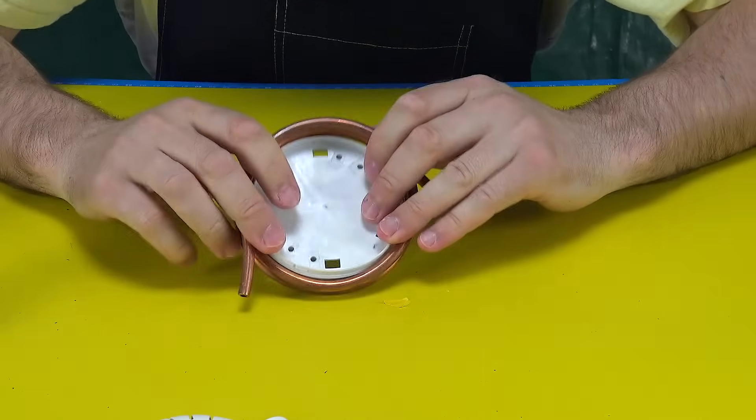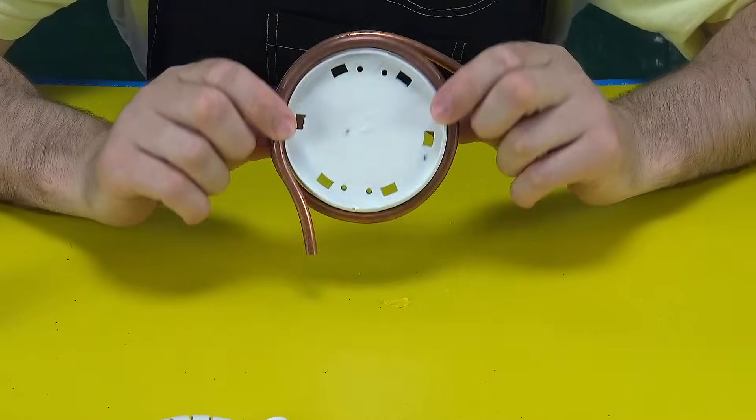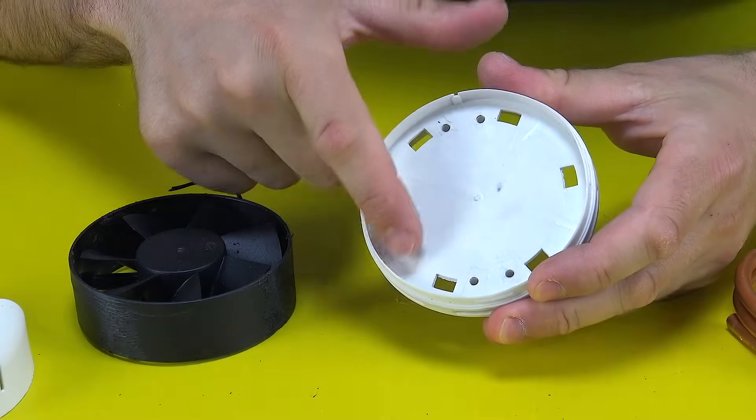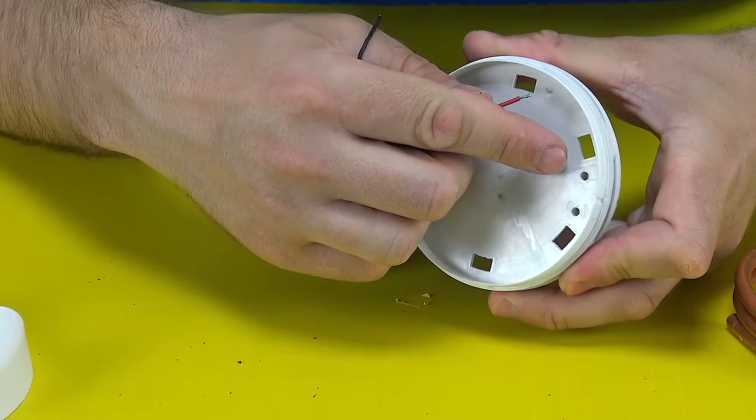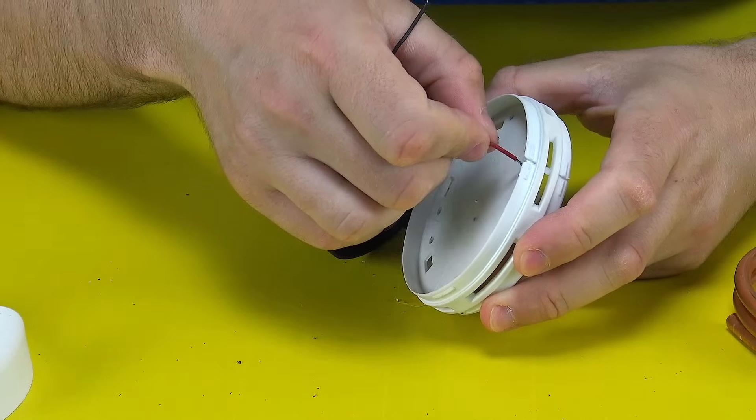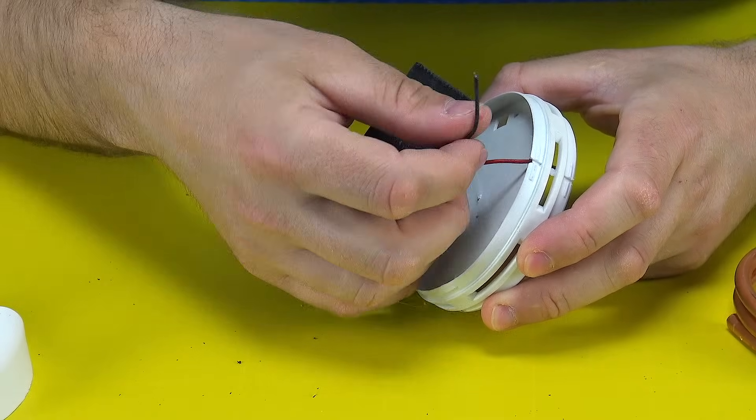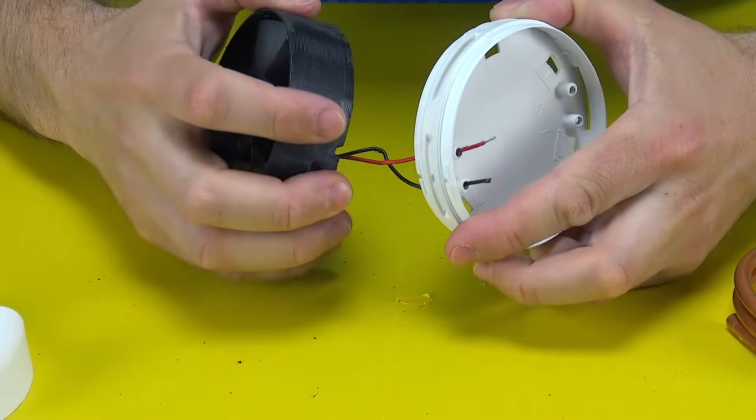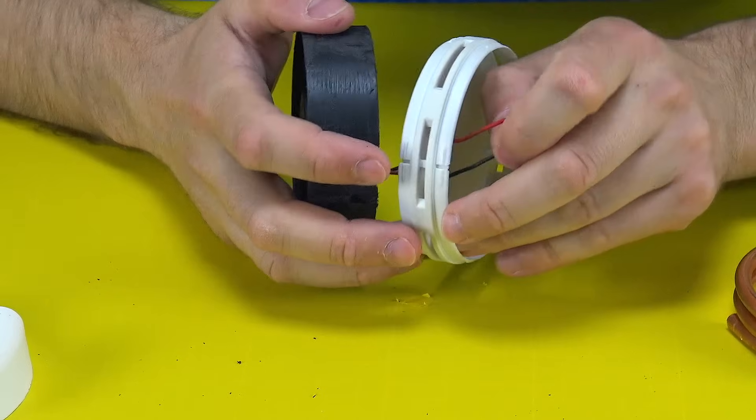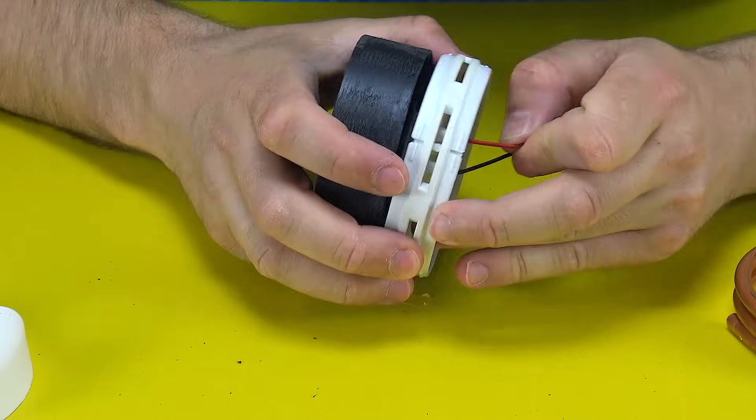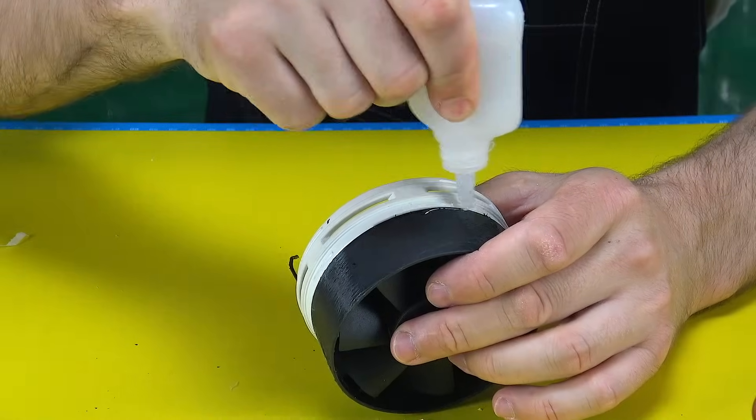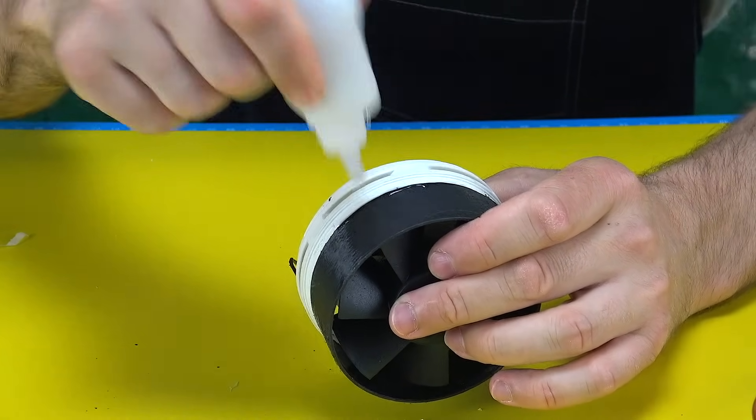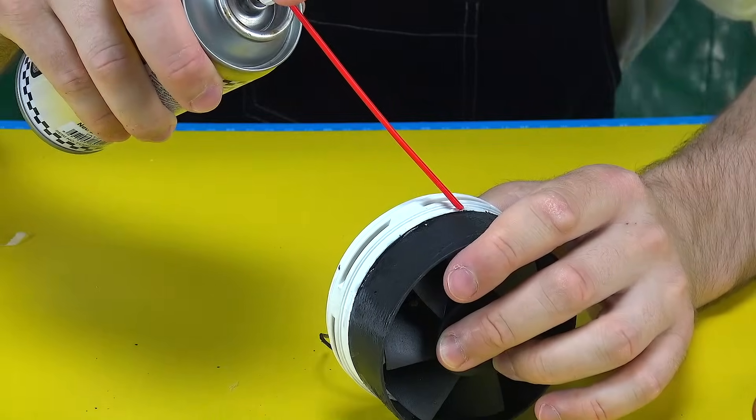The condenser is a crucial part of refrigeration and air conditioning systems. Its main job is to release heat from the hot, compressed refrigerant gas, turning it back into a liquid. Imagine this: after the compressor squeezes the gas tightly, it becomes very hot. The condenser cools this gas down by releasing heat into the surrounding air, so the refrigerant turns back into liquid and gets ready for the next cooling cycle. Without the condenser, the system simply won't work efficiently. Normally, the heat would stay trapped inside, and you wouldn't get any cooling.